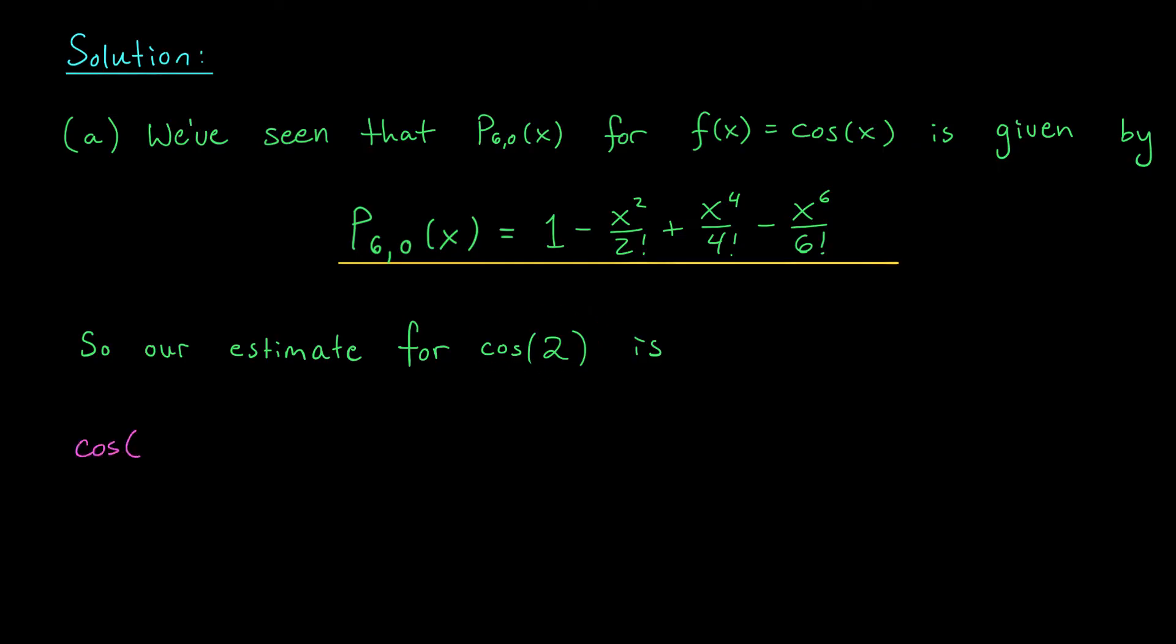We find that cos(2) should be approximately equal to this Taylor polynomial, p6,0(2), which is 1 minus 2 squared over 2 plus 2 to the 4 over 4 factorial minus 2 to the 6 over 6 factorial. This gives me 1 minus 4 over 2 plus 16 over 24 minus 64 over 720. Now if you simplify this expression, what you should be left with is minus 19 over 45, which is approximately minus 0.422. So there you have it. We've obtained an approximation for cos(2) using this 6 degree Maclaurin polynomial for cos(x). The question now becomes how accurate is this approximation? How close is minus 19 over 45 to the true value of cos(2)?